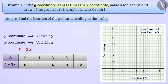Step 3: Now we will find the location of points according to the scale. When the value of x is 0, the value of y is also 0 — both coordinates are 0, so we will draw a point at the origin. When the value of x is 1, the value of y is 3. We will move 1 unit to the right from the x-axis and then 1 unit upward, and mark a point at this place.